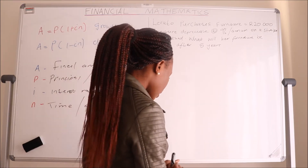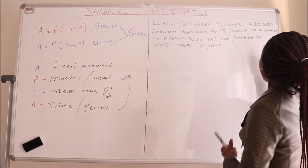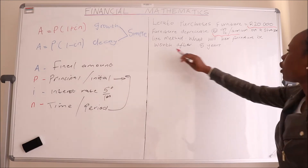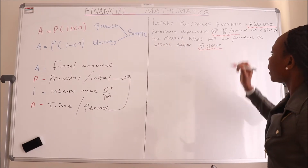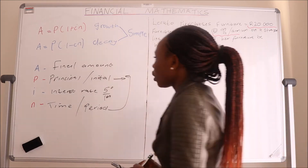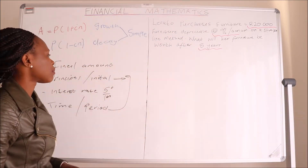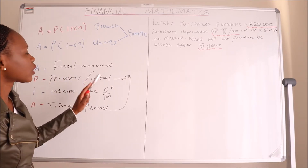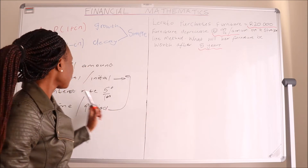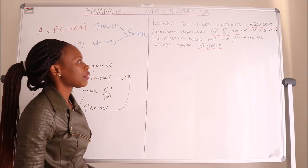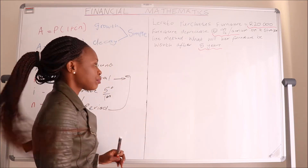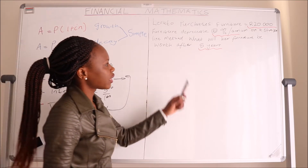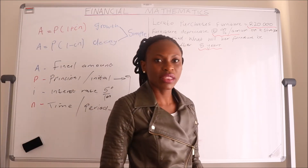Our initial amount — the value of the goods — is twenty thousand. The interest rate is nine percent per annum on a straight line method, and they ask what will happen after five years. We have all the parameters we need. We don't have A — that's what we're looking for. P, the principal or initial amount, is twenty thousand. I is nine percent per annum, which we divide by one hundred to convert to decimal. N, the time period, is five years.